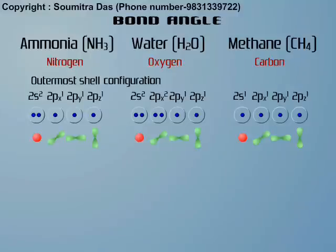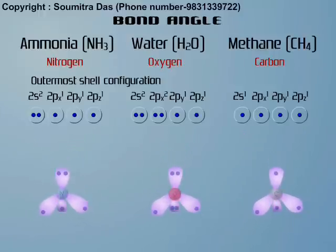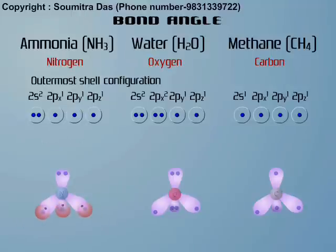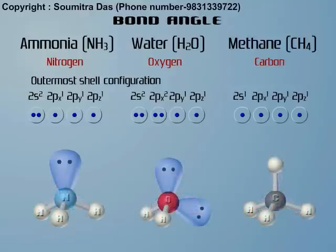These central atoms' outermost orbitals hybridize to form four sp3 hybrid orbitals. One of the sp3 orbitals in nitrogen has a lone pair, and three others are bonded with three hydrogen atoms. Two sp3 orbitals in the oxygen atom have lone pair electrons, the other two being bonded with two hydrogen atoms. All four sp3 hybrid orbitals of carbon are bonded with four hydrogen atoms.